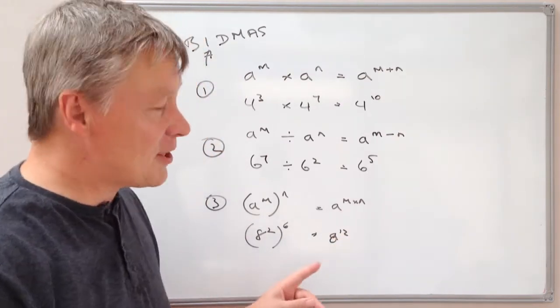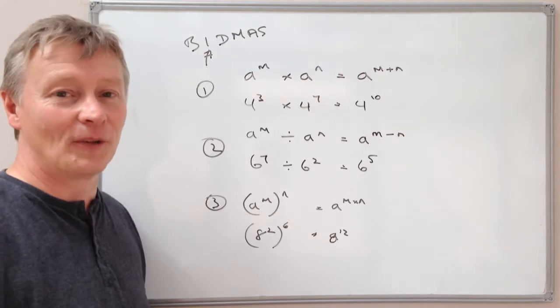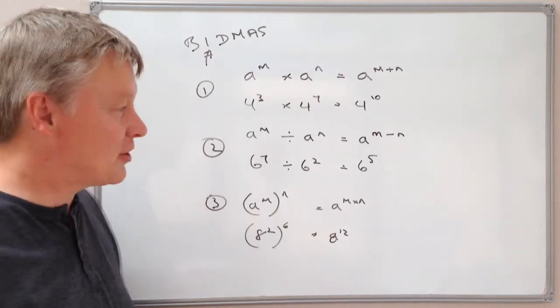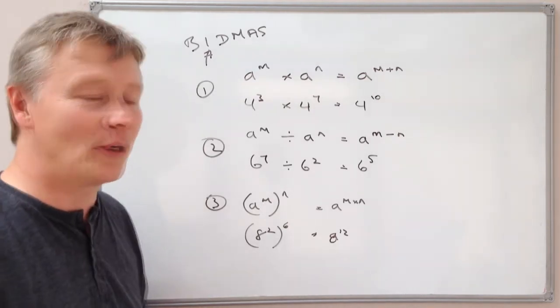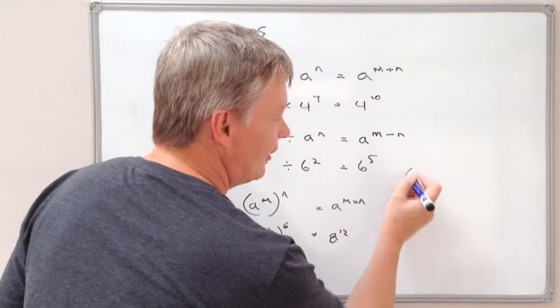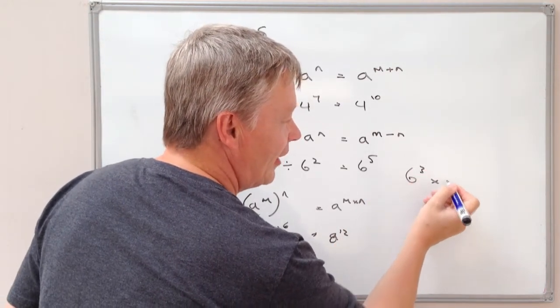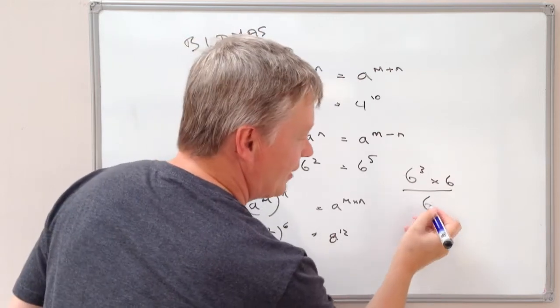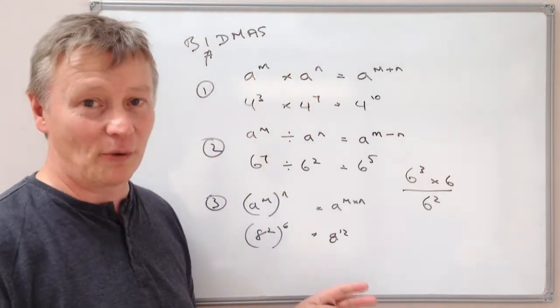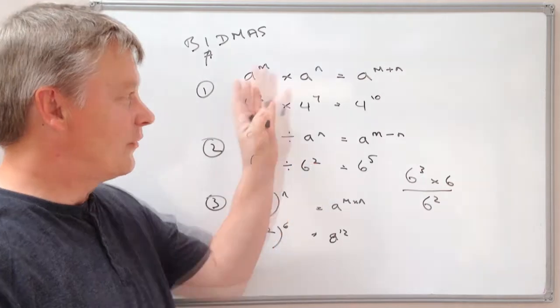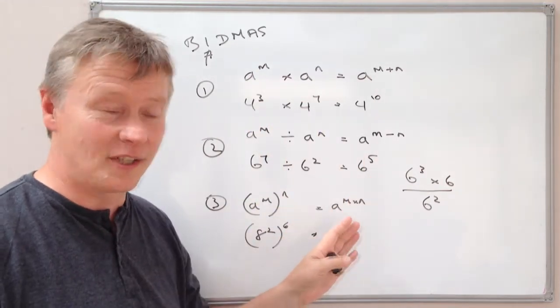I hope that's been OK for you. I'm going to give you one final exam paper type question, which is what they want you to do is they want you to simplify something like this. So you've got 6 to the power of 3 times 6, divided by 6 to the power of 2. Well if we're going to simplify that, we've got to use these laws in order to do that.